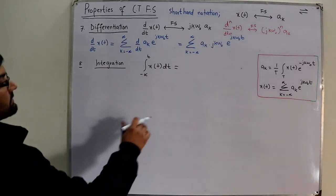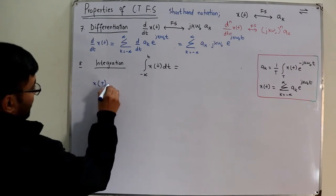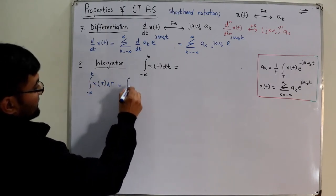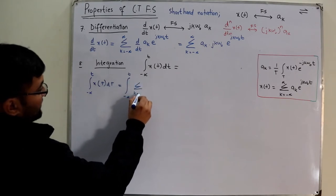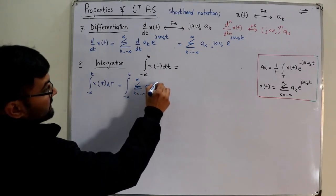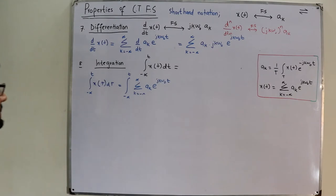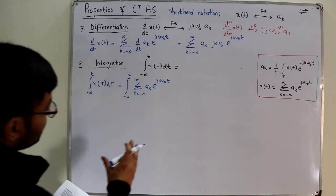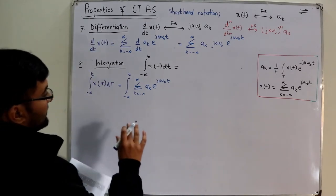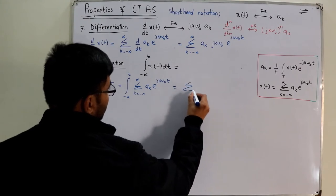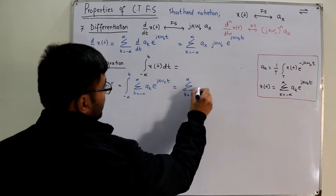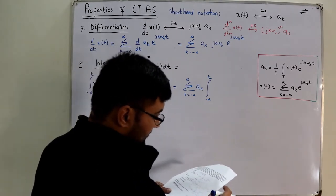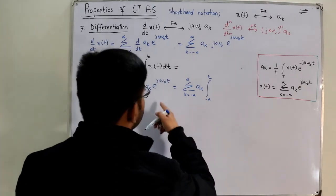Again using the synthesis equation, consider the integral of x(τ)dτ from negative infinity to t. Substituting the synthesis equation gives a summation over k of a_k times the integral of the exponential of jkω₀t. The summation and a_k can be taken outside since they do not depend on the integration variable.